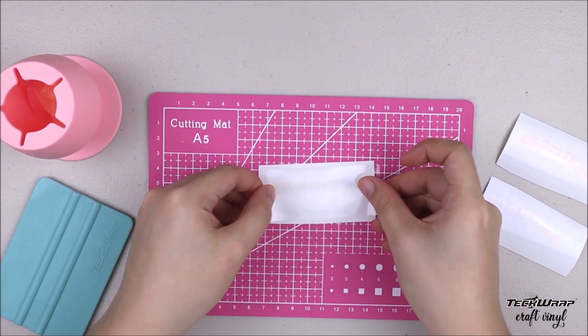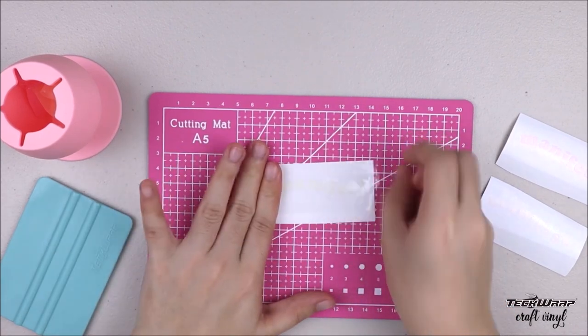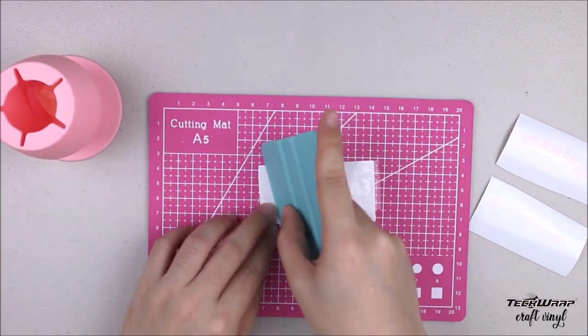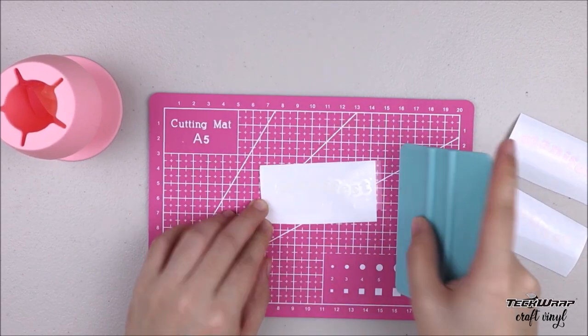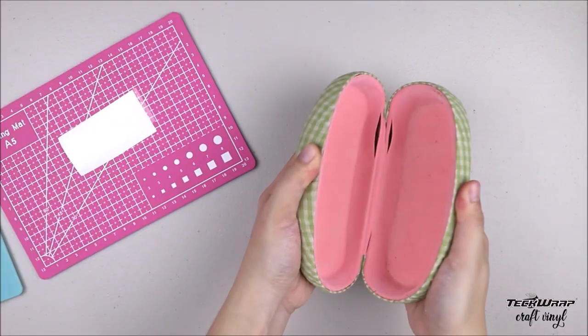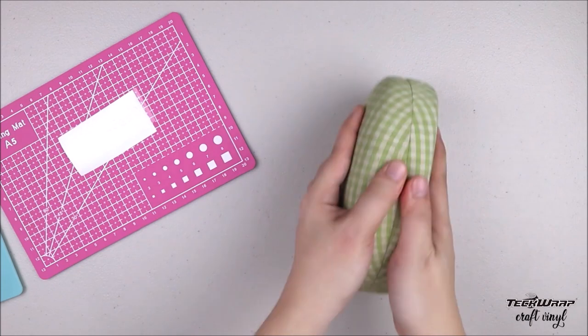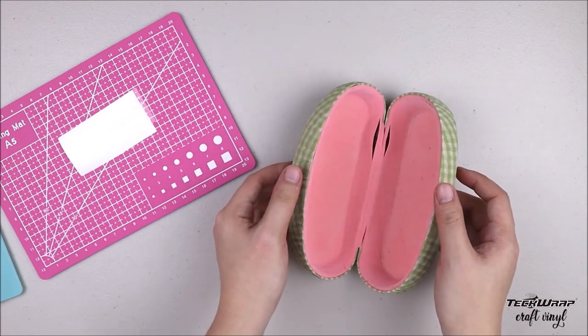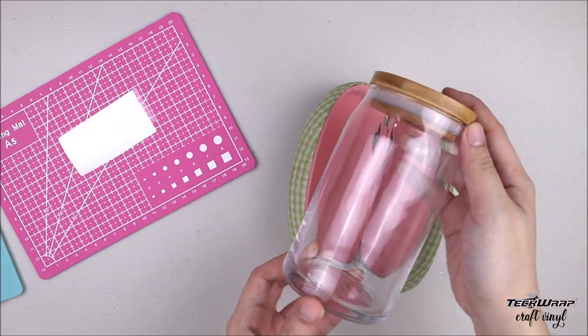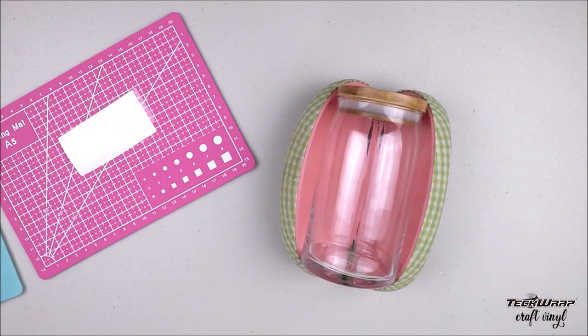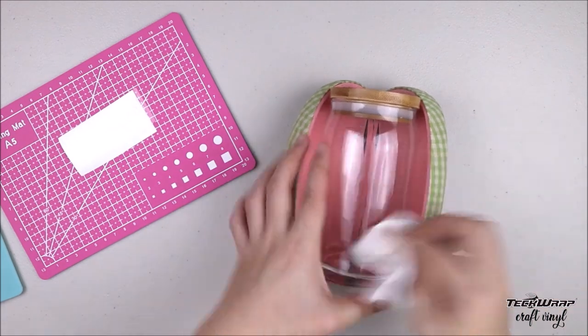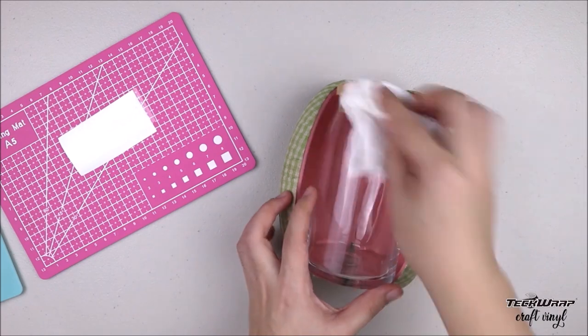Now I'm placing the transfer tape on top of my first design and I'm using the TechWrap squeegee to burnish the vinyl. I'm also using this old glasses case to hold my beer can glass while placing the vinyl. Make sure that the glass is clean so wipe the surface before placing the vinyl on top.